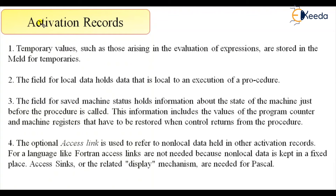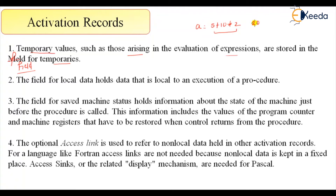The first content in the activation record is temporary values. Temporary values, such as those arising from evaluation of expressions, are stored in the field for temporaries. For example, if we have a = 5 + 10 * 2, we cannot evaluate the entire expression in one go — intermediate values like 20 and then 25 will be stored in the temporaries field.